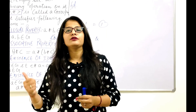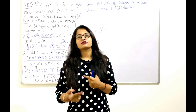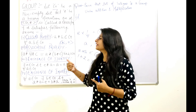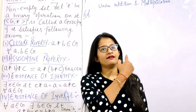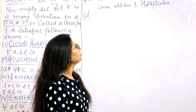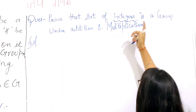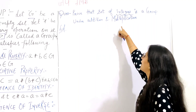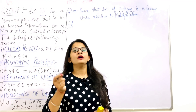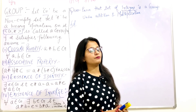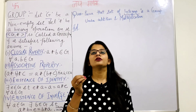We will now solve an example using these properties — checking whether a set has closure property, associative property, existence of identity, and existence of inverse. The question is: prove that the set of integers is a group under the operations of addition and multiplication. Before starting, note that all positive and all negative numbers are known as integers.